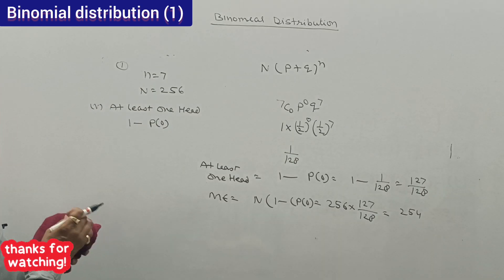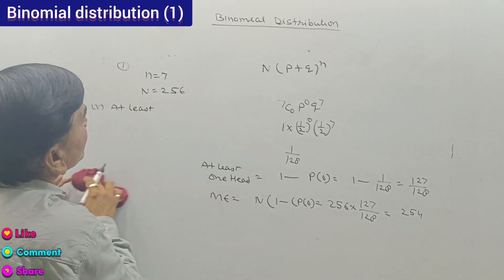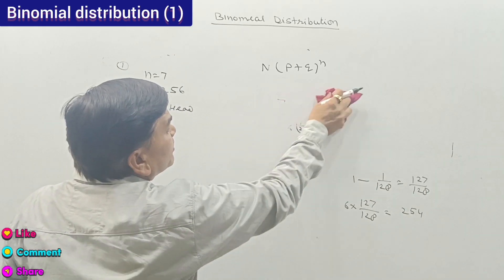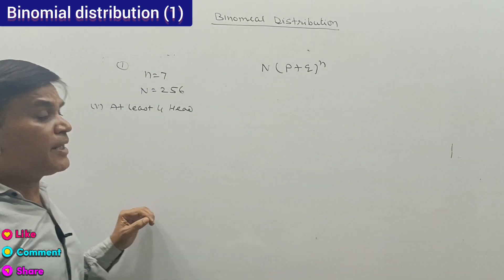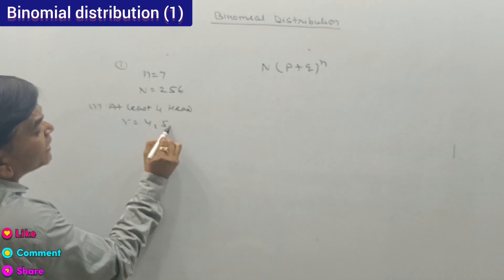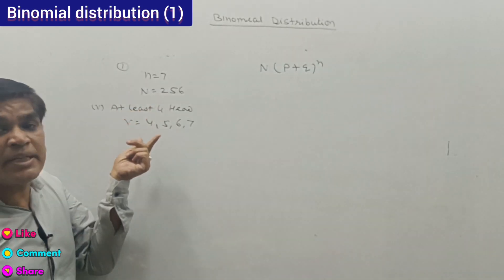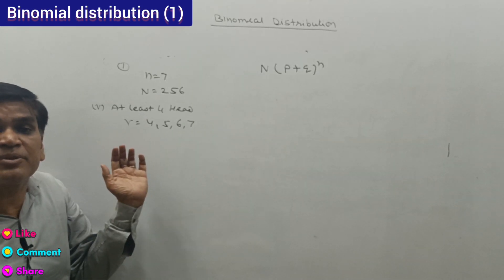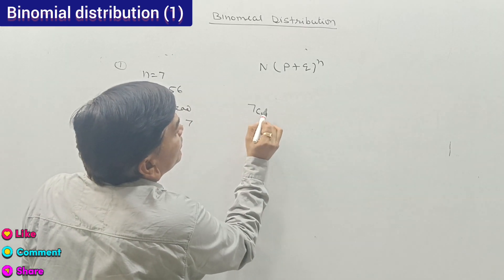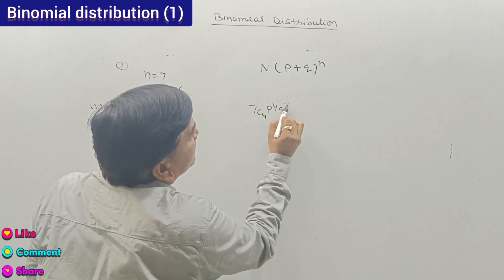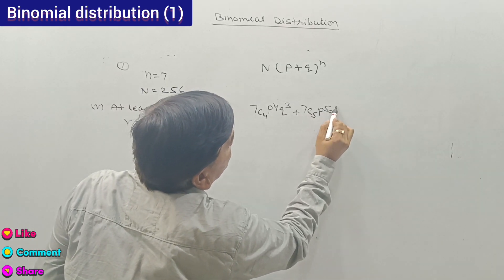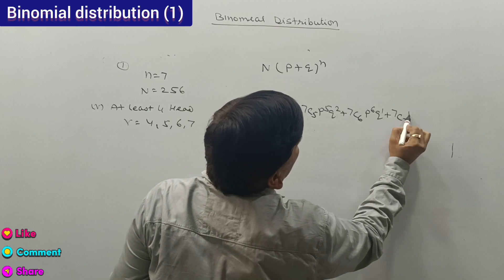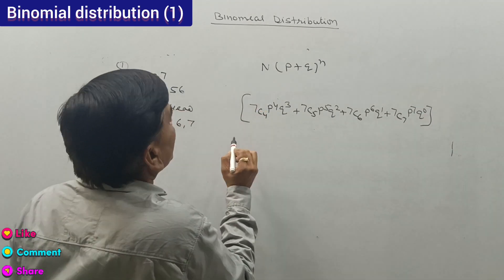Suppose the question asks for at least 4 heads — meaning head may be 4, 5, 6, or 7. We compute: 7C4 × p^4 × q^3 + 7C5 × p^5 × q^2 + 7C6 × p^6 × q^1 + 7C7 × p^7 × q^0, all happening N = 256 times.